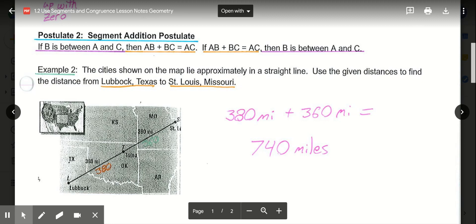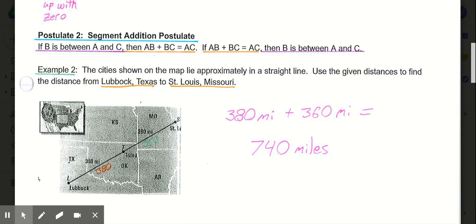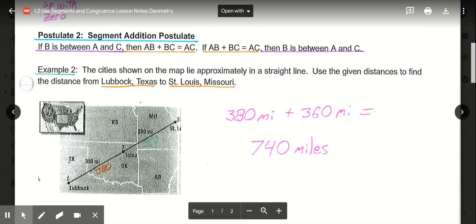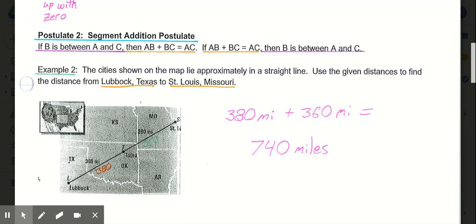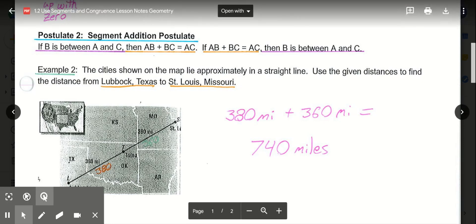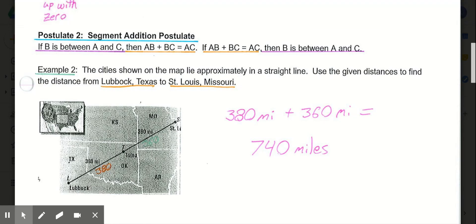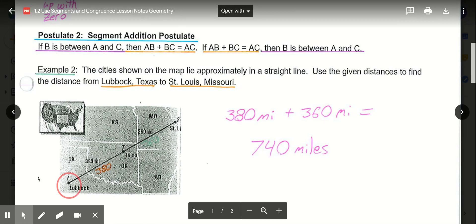So for example, if we look down here at this picture, we have points L, T, and S. So our segment addition postulate says that L to T, that distance, plus T to S, so if we take segment LT plus TS, those two added together would give us the whole segment of LS.